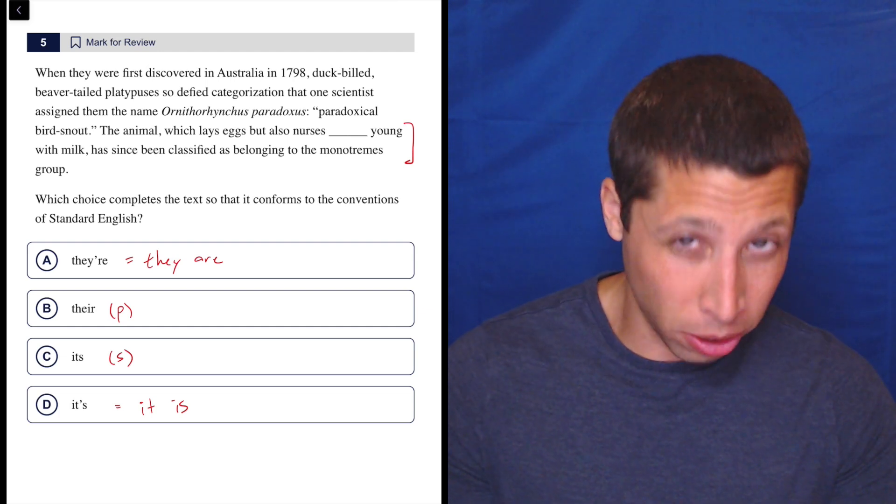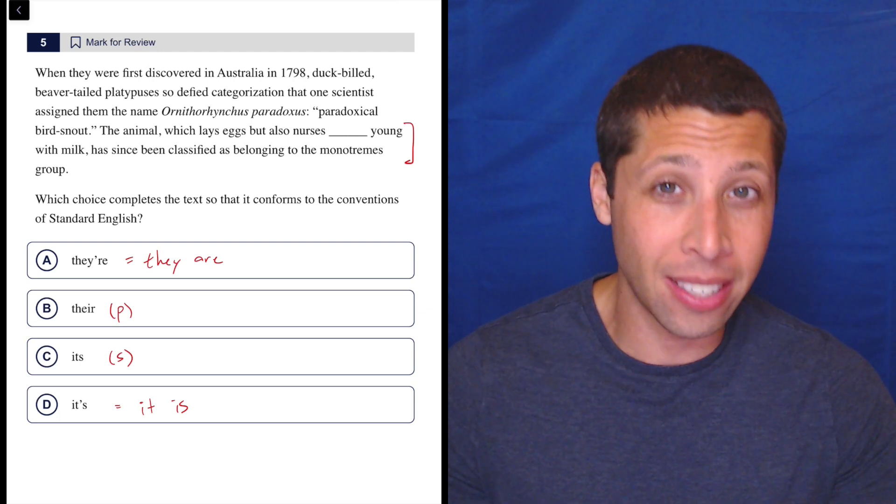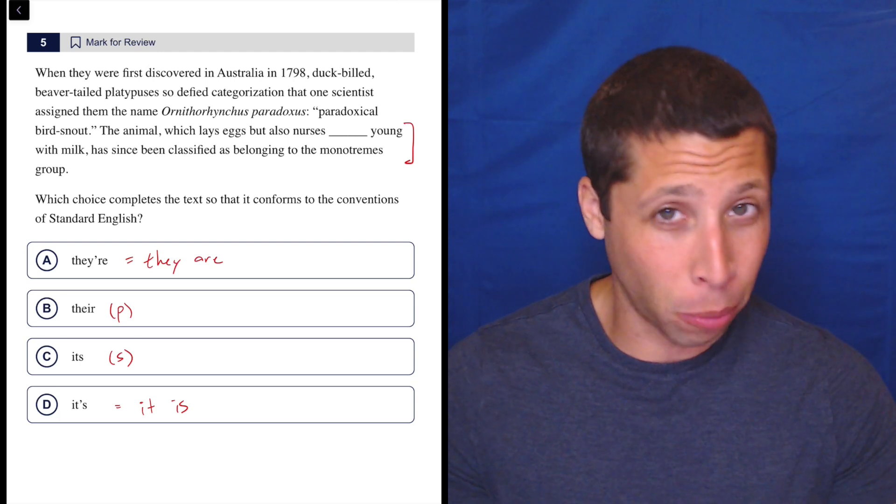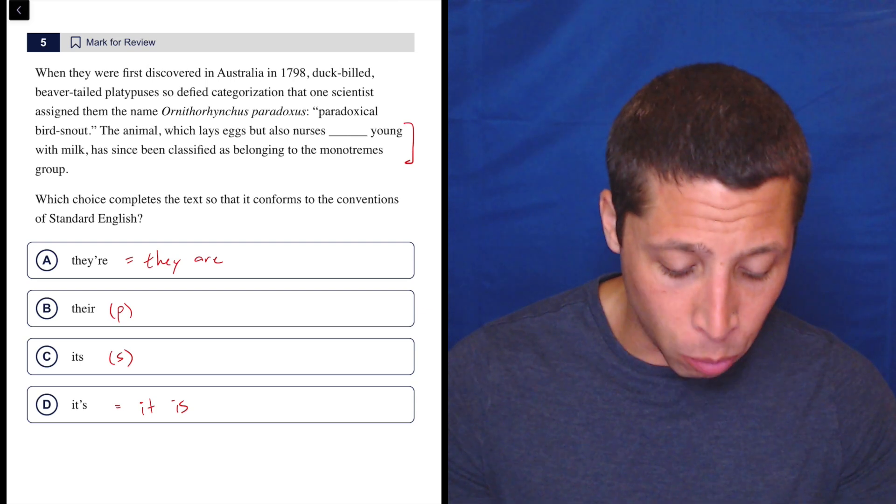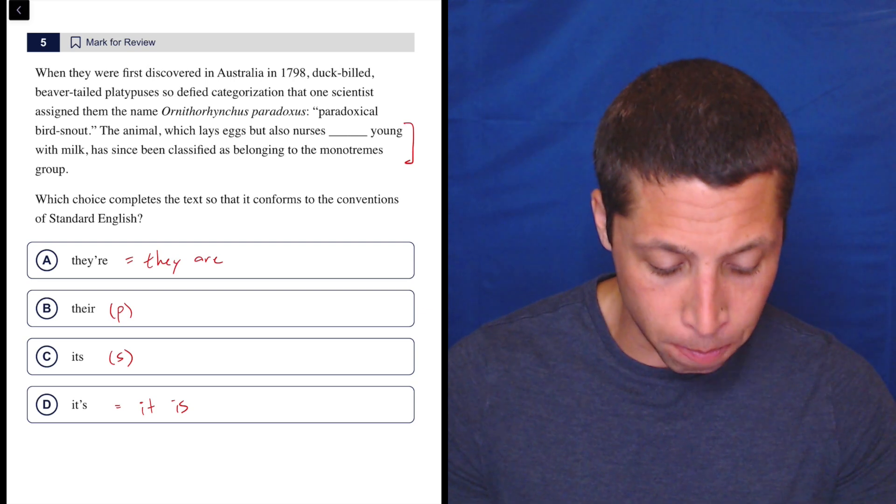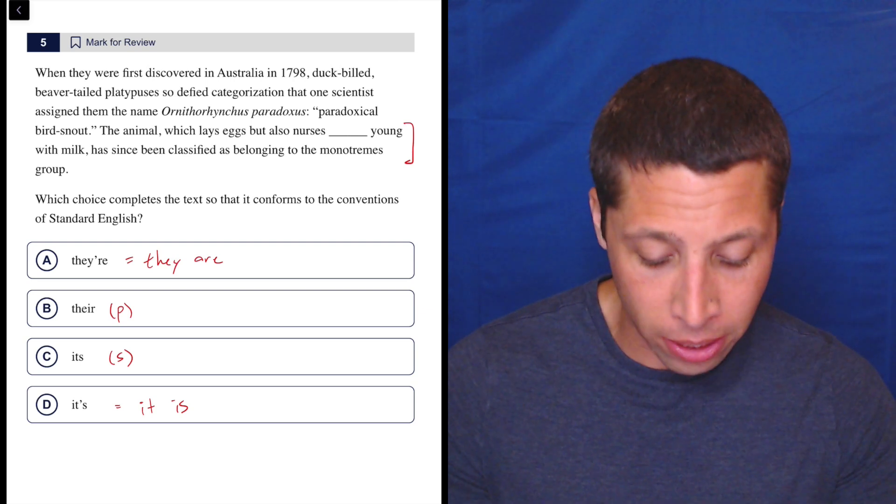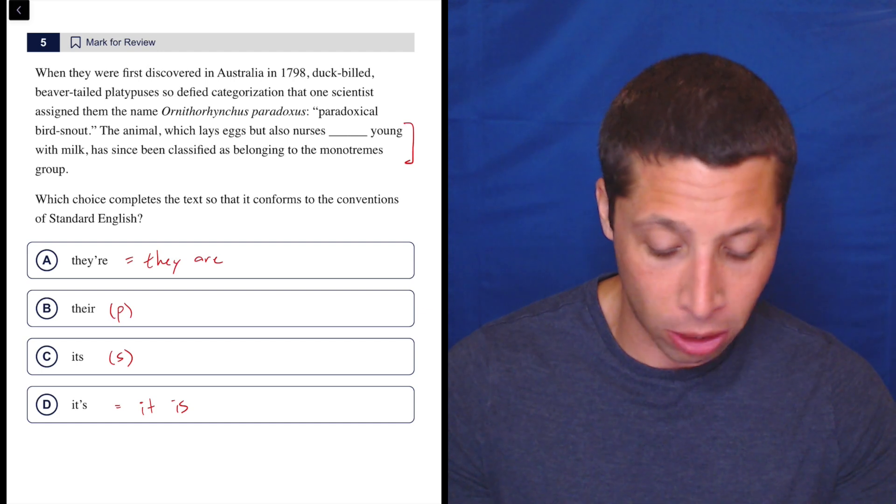Let's just read that sentence and see. That is usually the best way to go, but if it doesn't include the noun that we're referring to, we might need to go back. So let's see what the sentence says: 'The animal, which lays eggs but also nurses its young with milk, has since been classified as belonging to the monotremes group.'